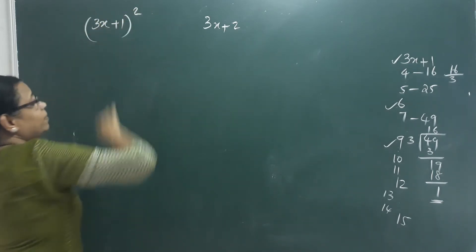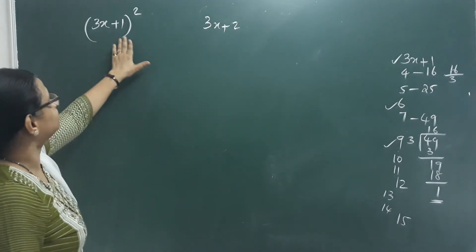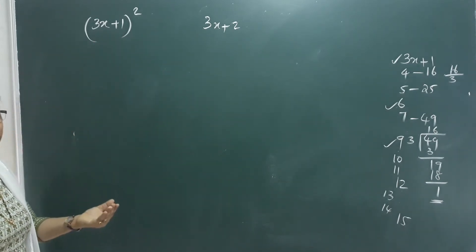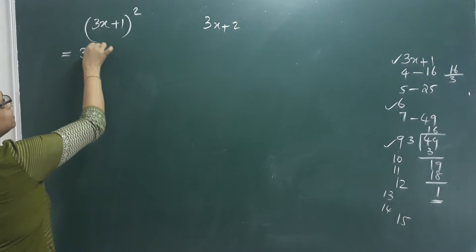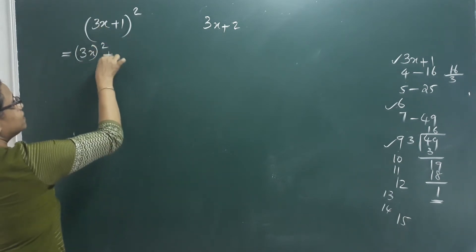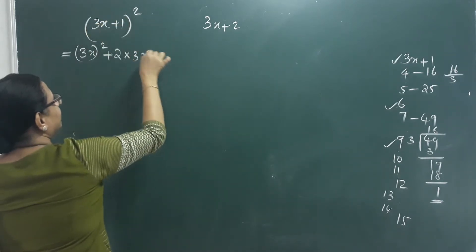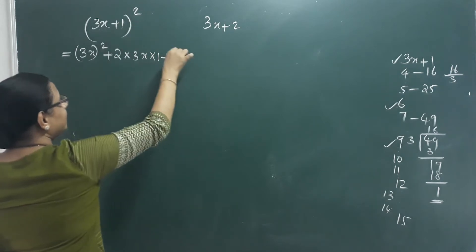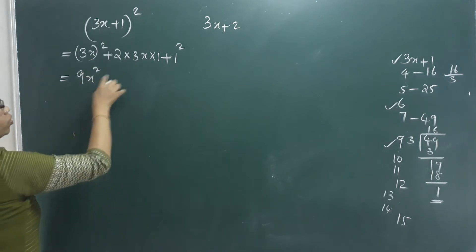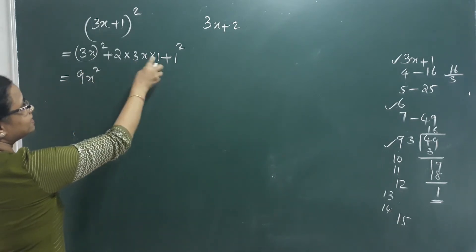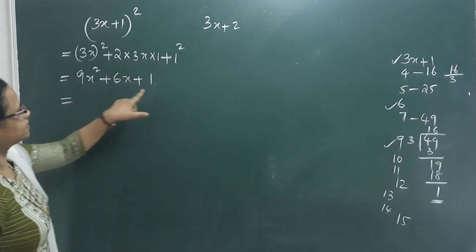For this square, we have studied the formula: a square plus 2ab plus b square. This square is (3x+1)². Expanding: a square is 9x square, plus 2ab which is 3x into 2 into 1, giving 6x, plus 1 square which is 1. So we get 9x square plus 6x plus 1.